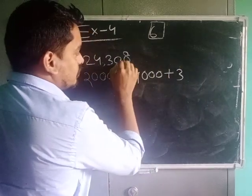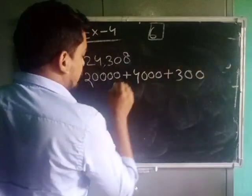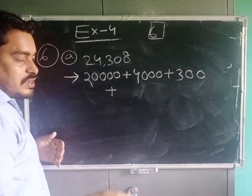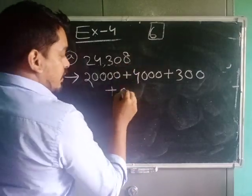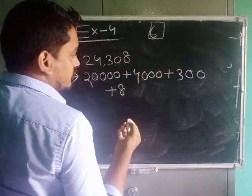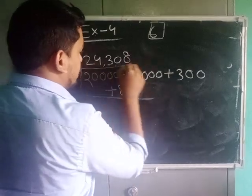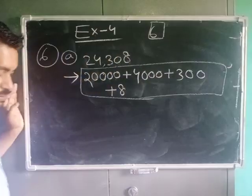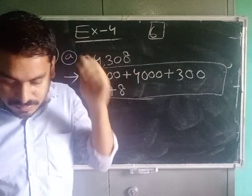Then after 3, how many digits? 2 digits. So 2, 0. Then after plus, for 0 no need to write. For 8 you see how many, nothing. So it is your expanded form. Understand? In this way you have to solve all.